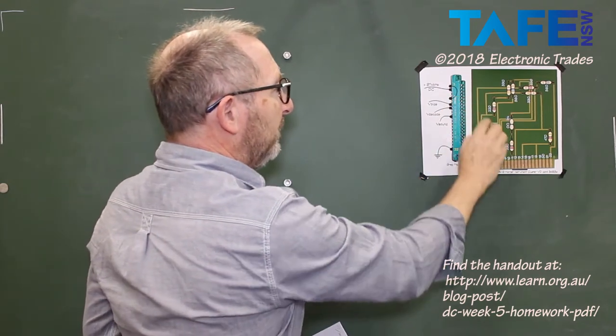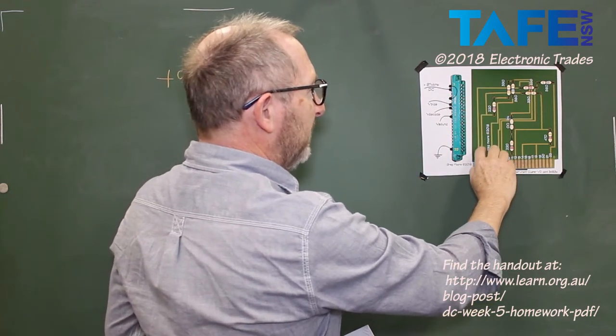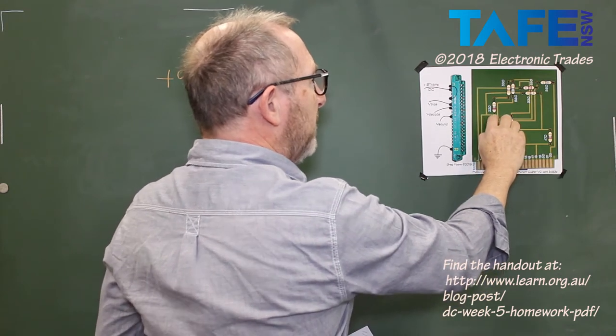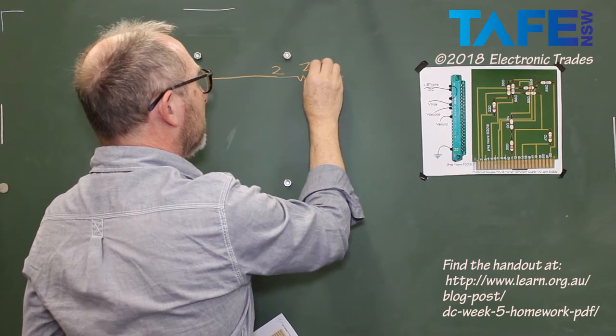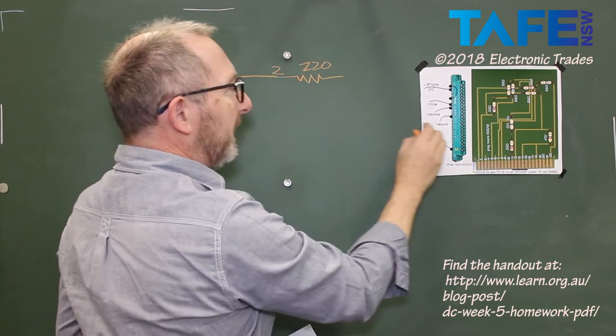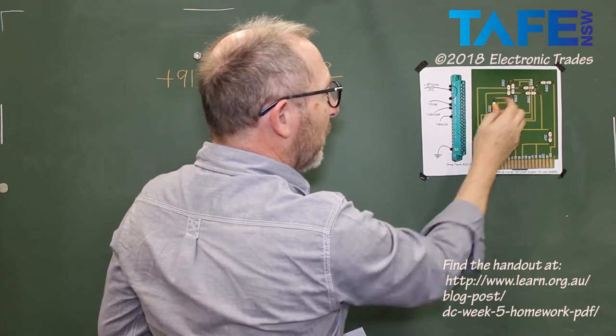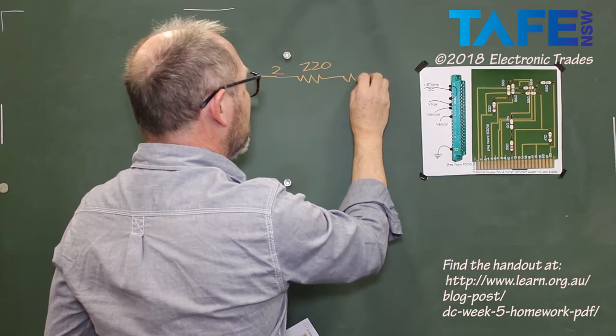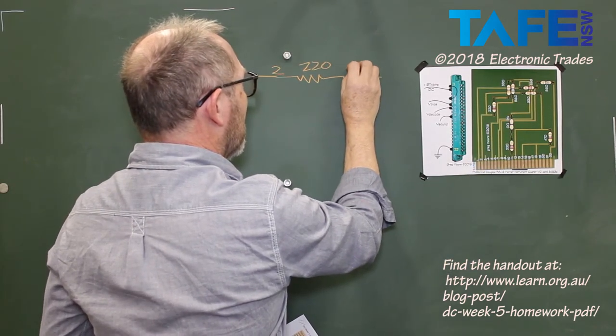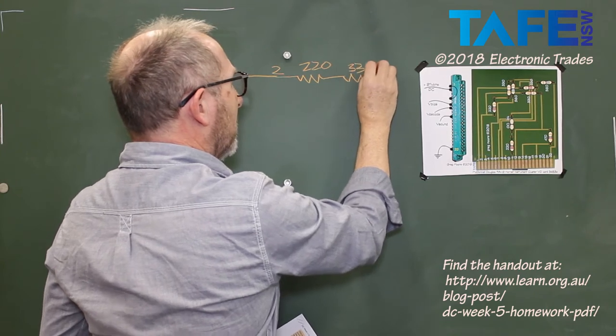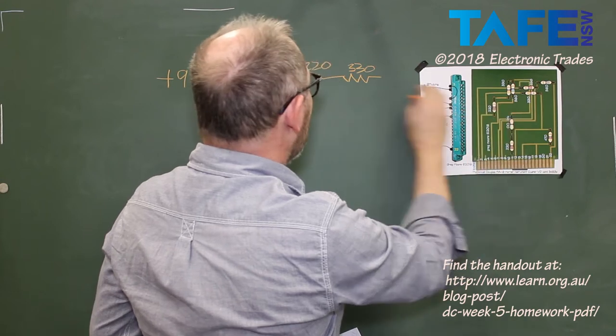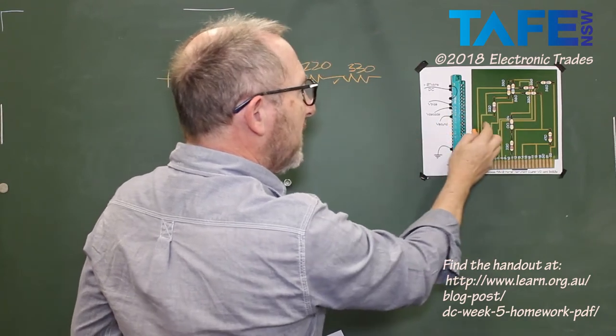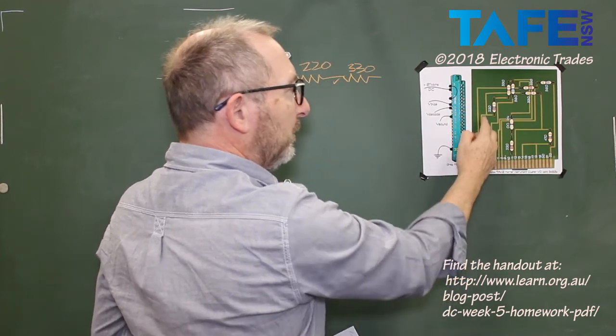And then pin 2, I have to come down here, find pin 2. Pin 2 comes up, picks up a 220 ohm resistor. The 220 comes along, picks up a 330 ohm resistor. And there's nothing at the junction there so he gets the tick, he's fine. But where the pin 2 meets the 220, there is something happening.